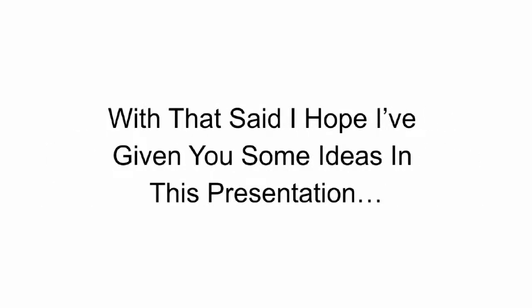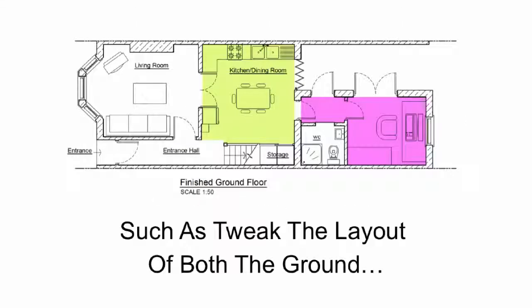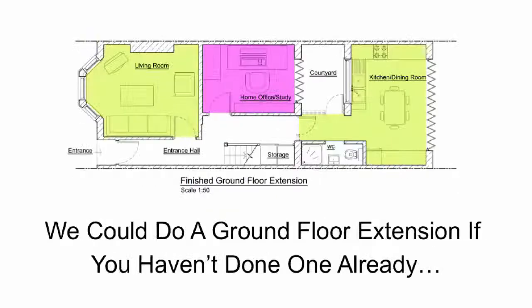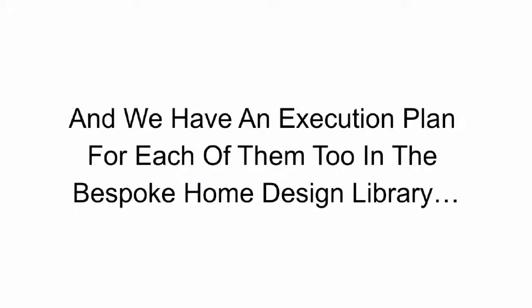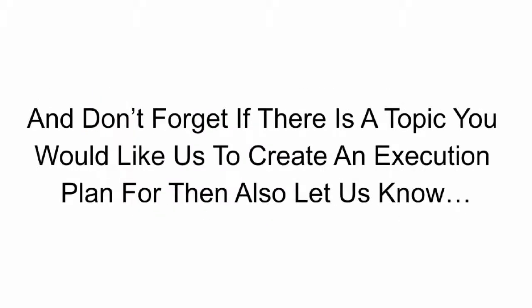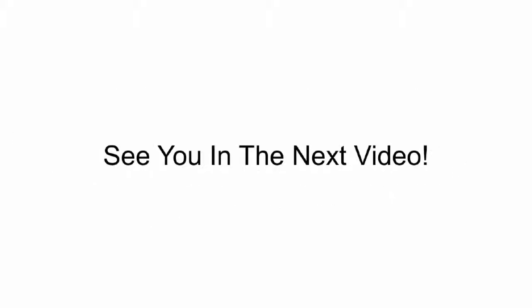I hope I've given you some ideas with this presentation. There are other things we can do to make the house bigger, such as tweaking the layout of the ground and first floors, doing a ground floor extension, or even a loft conversion — and we have an execution plan for each of those in the Bespoke Home Design Library. If you have any questions or comments please post them in the Bespoke Home Design Braintrust group on Facebook, and if there is a topic you'd like us to create an execution plan for, also let us know. There's a lot more to check out in your membership area — I'll see you in the next video.